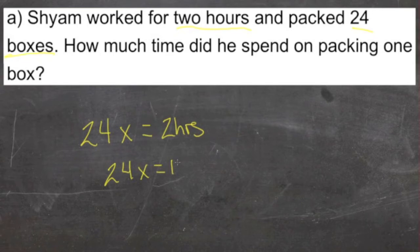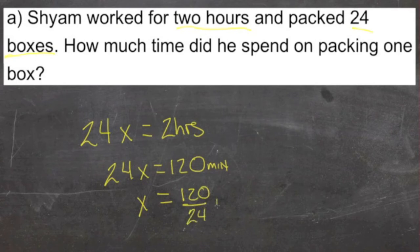Our equation states that 24 times whatever time he took per box is equal to the complete time for the project. You can solve that equation by dividing both sides by 24, and we get x equals 120 over 24 minutes. We can simplify the equation by 2, giving us 60 over 12, or 5. So it took him 5 minutes to pack each box.